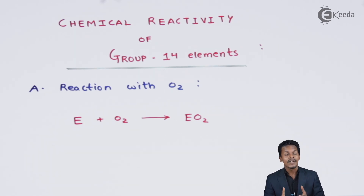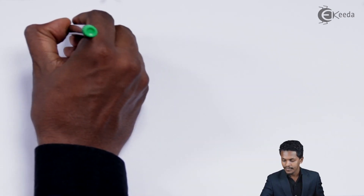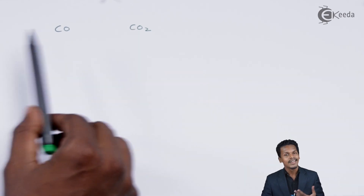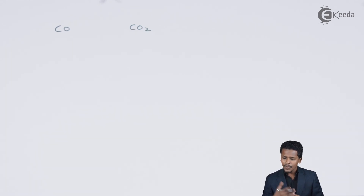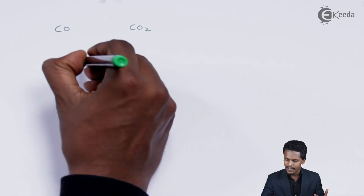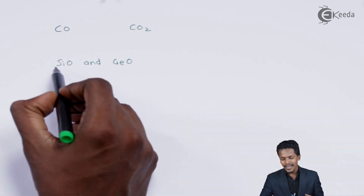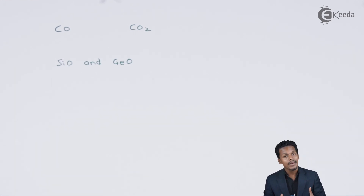These elements can form mono oxides as well as dioxides. For example, comparing carbon monoxide (CO) with carbon dioxide (CO2), the +4 oxidation state of carbon is very stable compared to the monoxide. Carbon also forms monoxides, but silicon monoxide (SiO) and germanium monoxide (GeO) are not stable and don't get easily prepared — SiO can be prepared but only at high temperature.